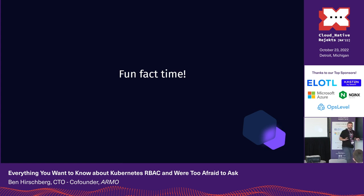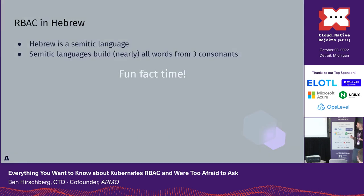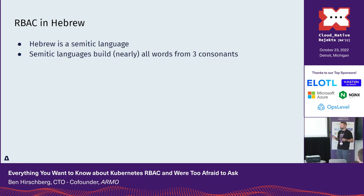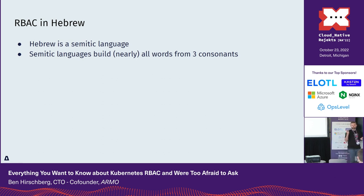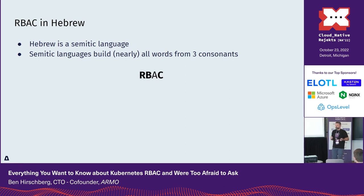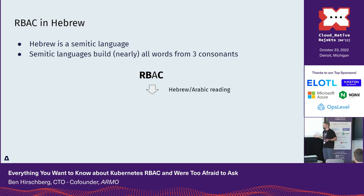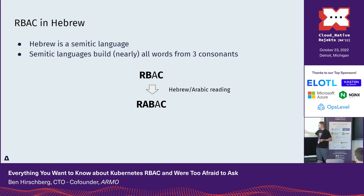A short, fun introduction to Middle Eastern languages: every Semitic language builds words using three consonants as root consonants — both Hebrew, Arabic, and other Semitic languages. If we look at RBAC, the consonants are R, B, and C. Since these languages also extrapolate vowels, you get RBAC. The question is — does anyone speak Arabic or Hebrew? What does this word mean in English? It means 'damn' — or a somewhat stronger translation.